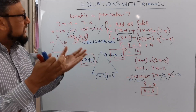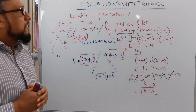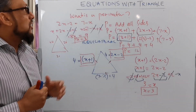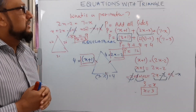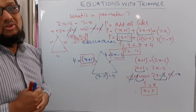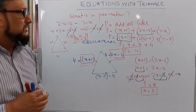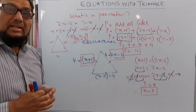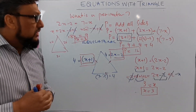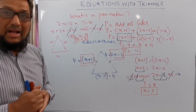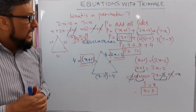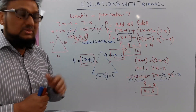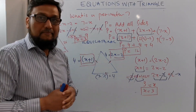So this is the concept of equations with triangles. You substitute x equals 3 into the sides to find the perimeter. If you like this video, please leave your feedback and see you in the next video, bye-bye.